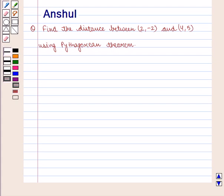Hello and welcome to the session. In this session, we are going to discuss the following question: Find the distance between the coordinates (2,-2) and (4,5) using Pythagorean theorem.